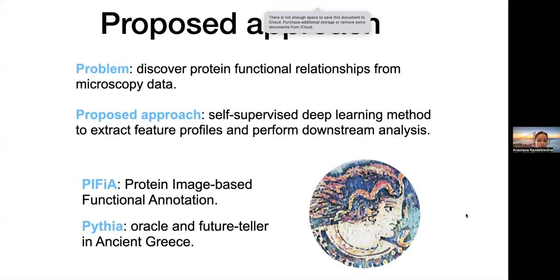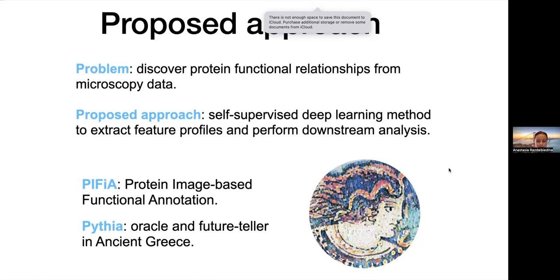The problem we're trying to tackle is how to discover protein functional relationships using solely microscopy data. The approach we propose is a self-supervised deep learning-based method that can extract feature profiles and perform many types of downstream analysis. We call it PFIA, standing for Protein Image-based Functional Annotation — also very similar to the oracle and feature teller from ancient Greece, as you can see in the picture on the right.